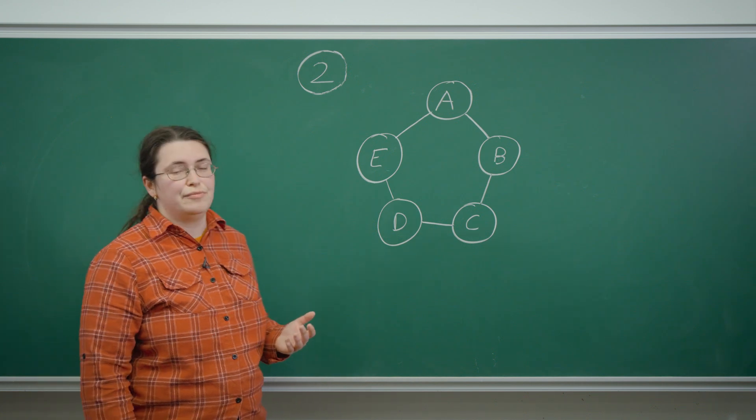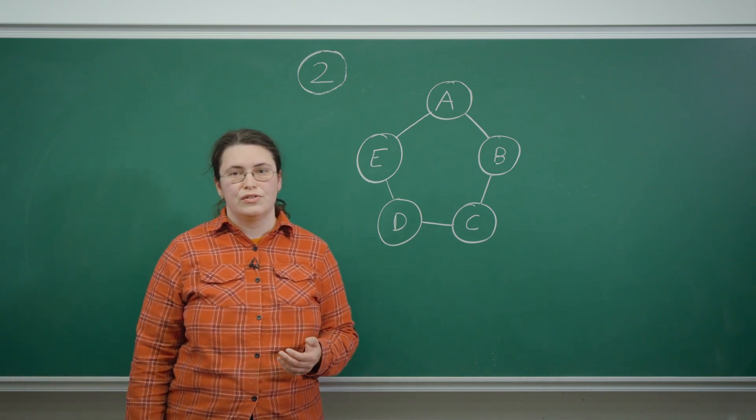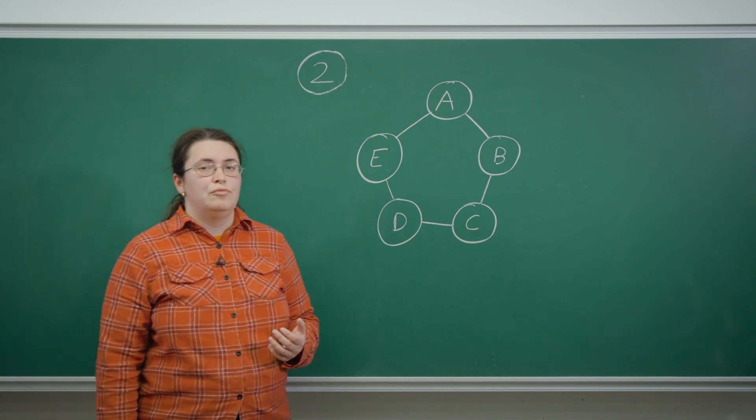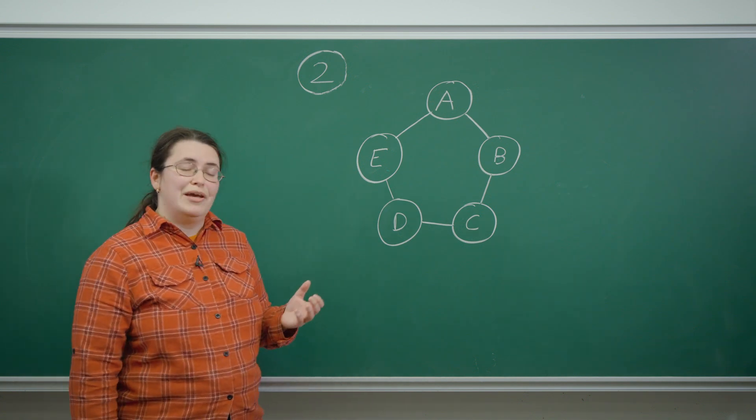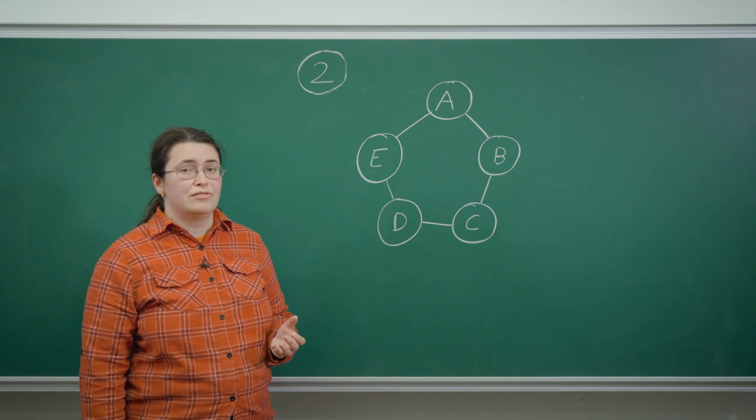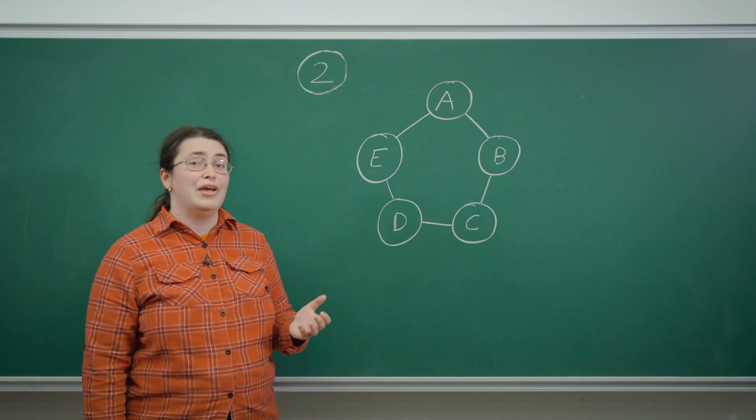When we were approaching the first part, we were arbitrarily picking colors based on what was available to us. And as long as we didn't arrive at a contradiction, we had one possible way of coloring the diagram.